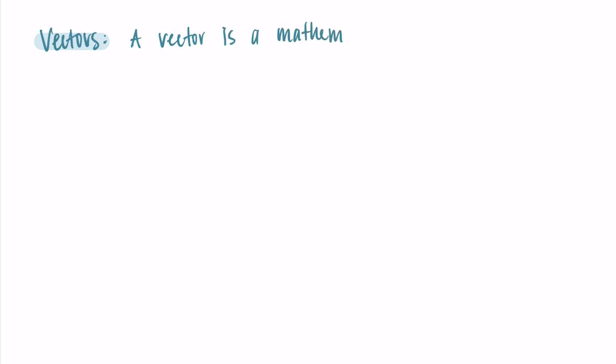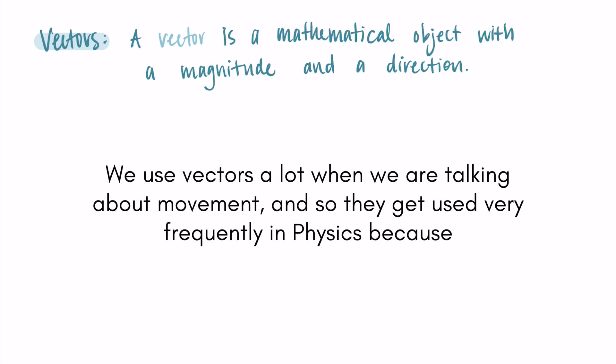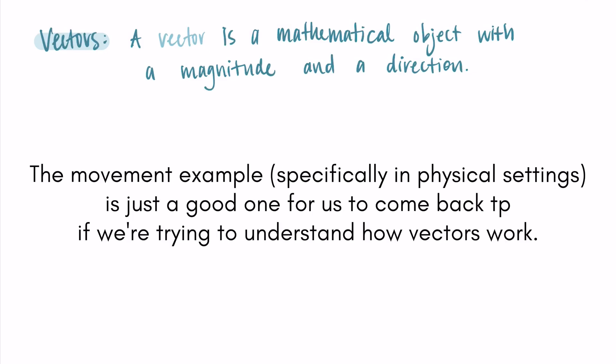Hi, welcome! In this video, I'm going to give you some basic information about vectors and start to talk about what they look like both algebraically and geometrically. A vector is a mathematical object that has a magnitude and a direction. We use vectors a lot when talking about movement, so they get used very frequently in physics — describing the direction of movement and how much movement happened. Just keep in mind that vectors can be used in other situations; the movement example in physical settings is just a good one to come back to.